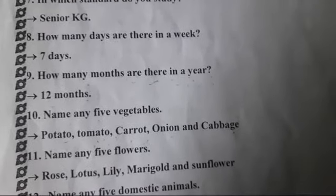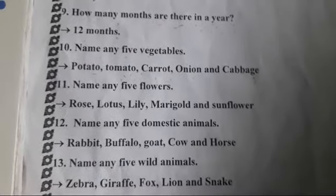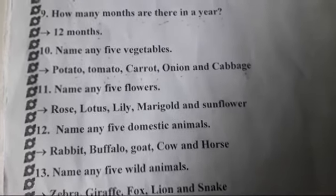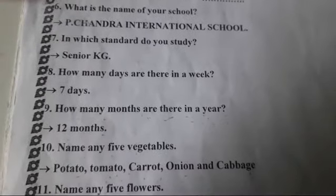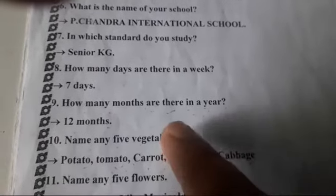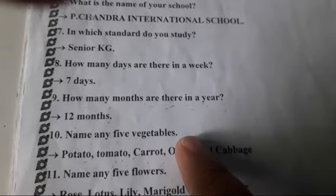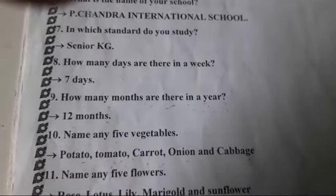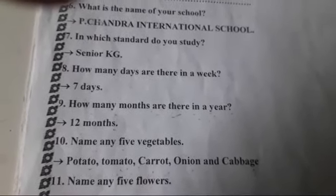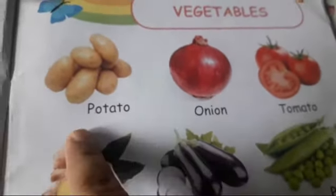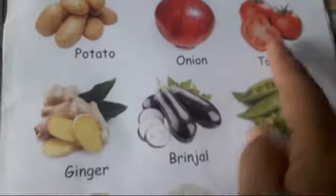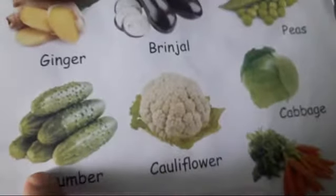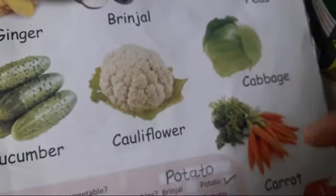Name any five vegetables — potato, tomato, onion and cabbage. Look at here children: potato, onion, tomato, ginger, brinjal, peas, cucumber, cauliflower, cabbage and carrot.